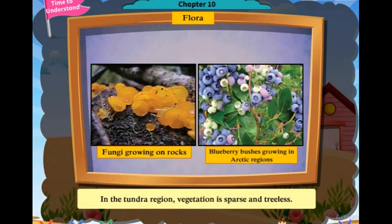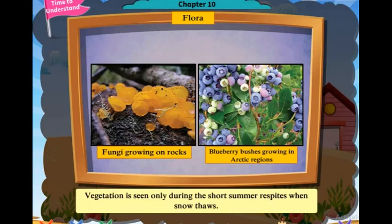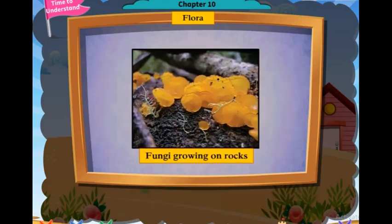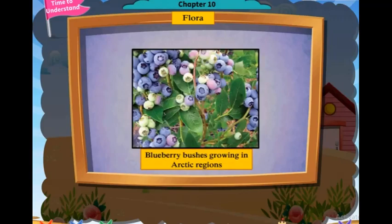In the tundra region, vegetation is sparse and treeless. Vegetation is seen only during the short summer respites when snow thaws. Examples include fungi growing on rocks and blueberry bushes growing in arctic regions.